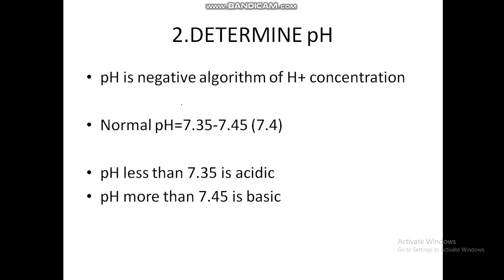The second step is to determine the pH. pH is the negative logarithm of H⁺ concentration. Normal pH is 7.35 to 7.45; we use 7.4 as the cutoff. If pH is less than 7.35 it is acidic; if more than 7.45 it is basic (alkalotic). Normal PCO2 is 35–45 (cutoff 40), and normal HCO3 is 22–28 (cutoff 24). Remember these three key values: 7.4, 40, and 24.